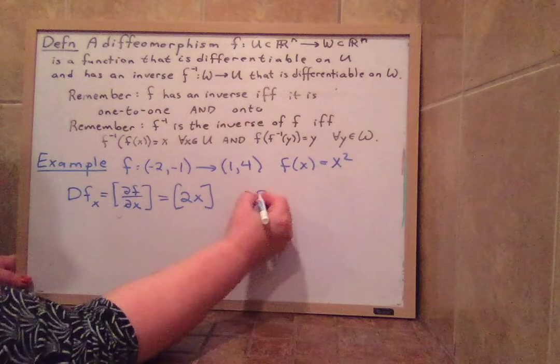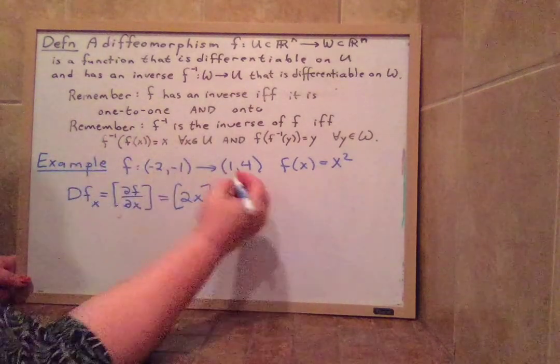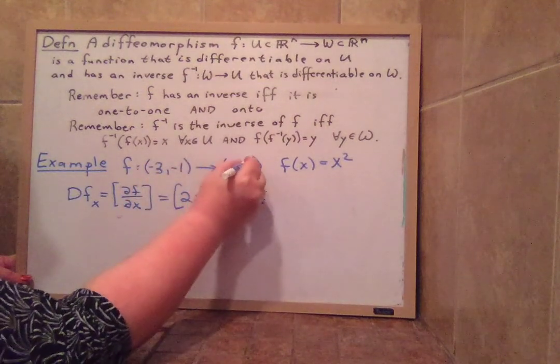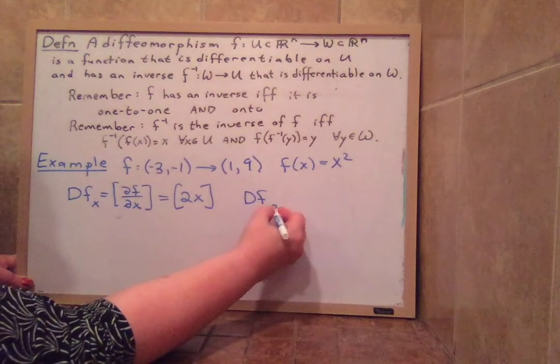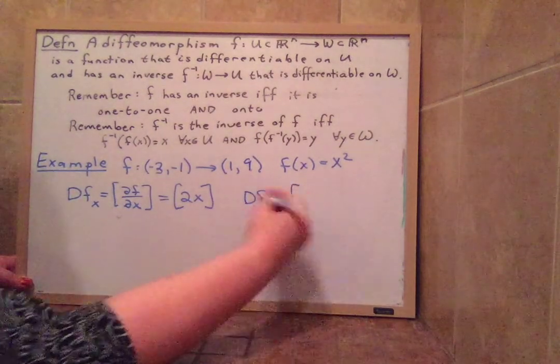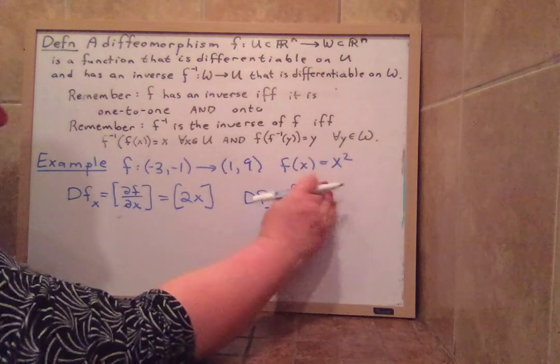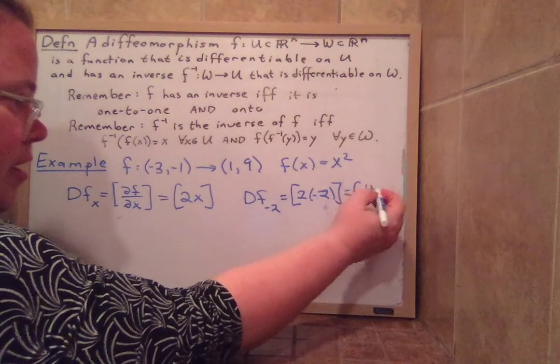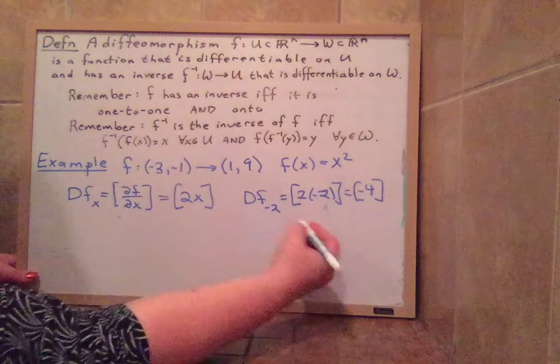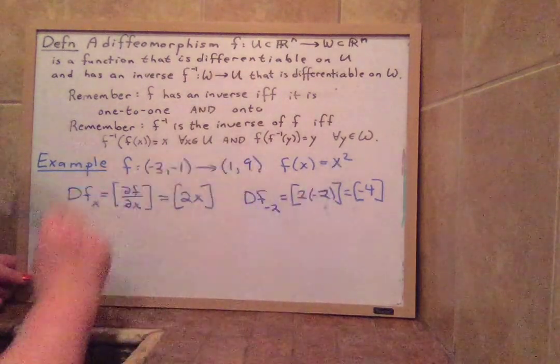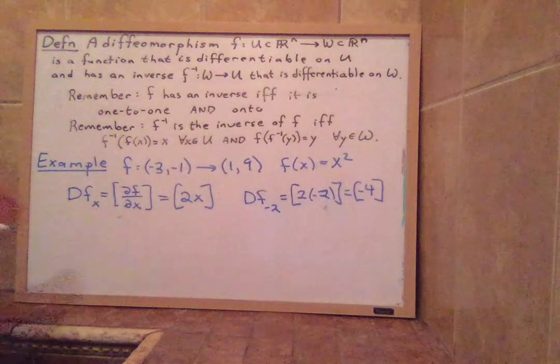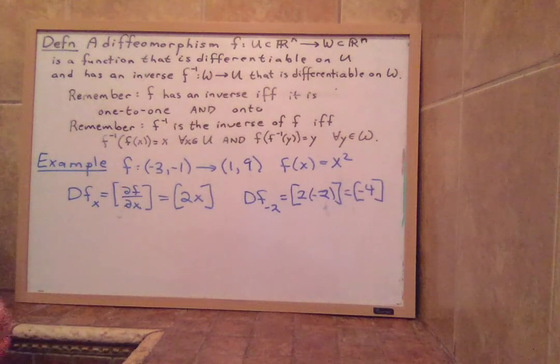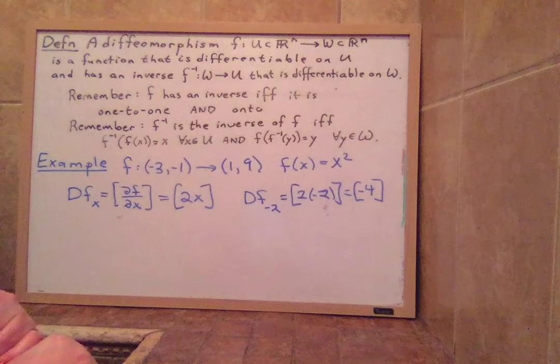For example, DF at some point in here between here and here. Let's make this negative three and make this nine. So if I choose a point in here like negative two, DF at negative two is the matrix, the one by one matrix, two times negative two, which equals negative four. And that's exactly the same as what you know as F dx evaluated at negative two. So 2x evaluated at negative two is negative four. We just think of them as matrices in this higher dimensional course.